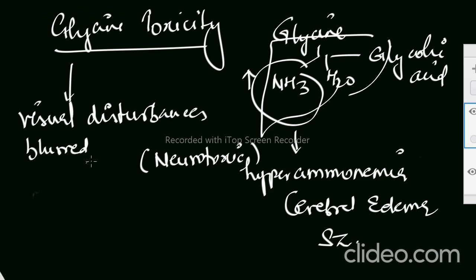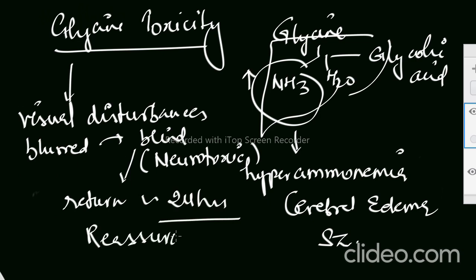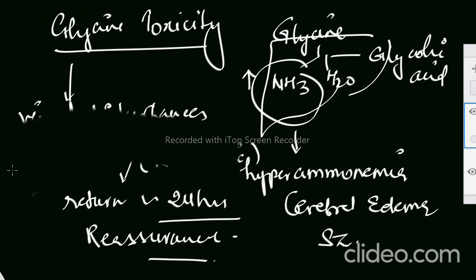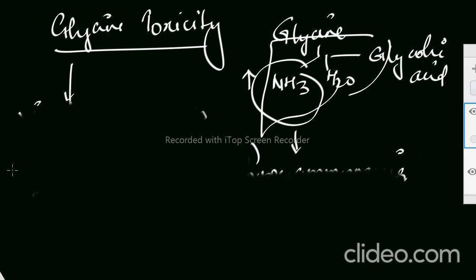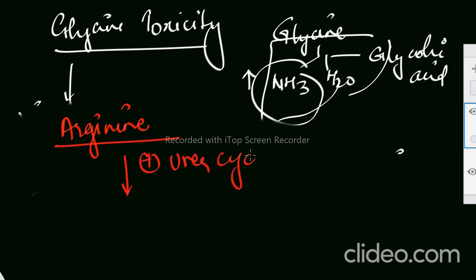From blurred vision to completely blind. But this vision will return back to normal within 24 hours, so we have to reassure the patient. Reassurance is the treatment. Another thing, if we want to deal with this glycine toxicity, if the examiner asks what can you give in drug, so what can we give is arginine. Why arginine? Because via urea cycle it will stimulate metabolism of ammonia.